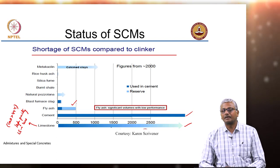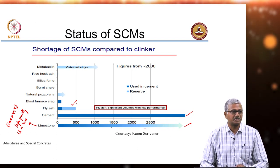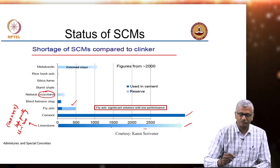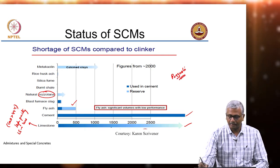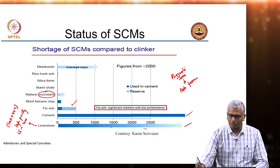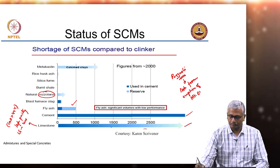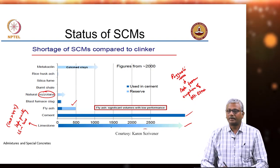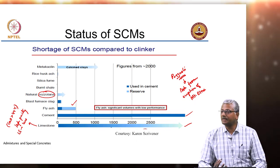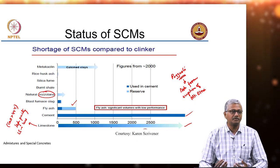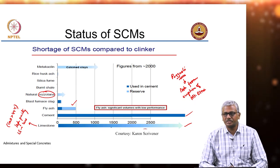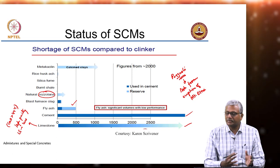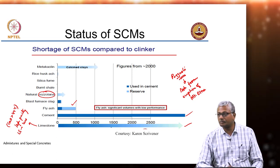Natural pozzolana — siliceous volcanic ash — is the source of the very term 'pozzolana', which comes from a place called Pozzuoli in Italy. They used the ash from the eruption of Mount Etna as an ingredient in lime water and found it enhanced the properties of lime. That was the first known use of pozzolana. The Greeks also did a lot of work with pozzolanic additives, and from there the name spread significantly.